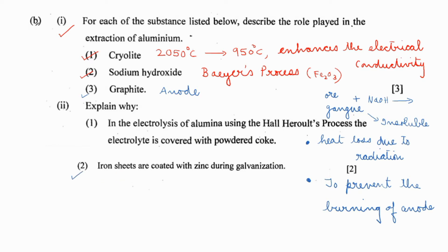Iron sheets are coated with zinc during galvanization. Galvanization is a process of coating iron with molten zinc. Zinc is more reactive than iron, so it will readily oxidize to form a layer of zinc oxide on the surface. Once the zinc oxide layer is formed, it in turn protects the metals below.